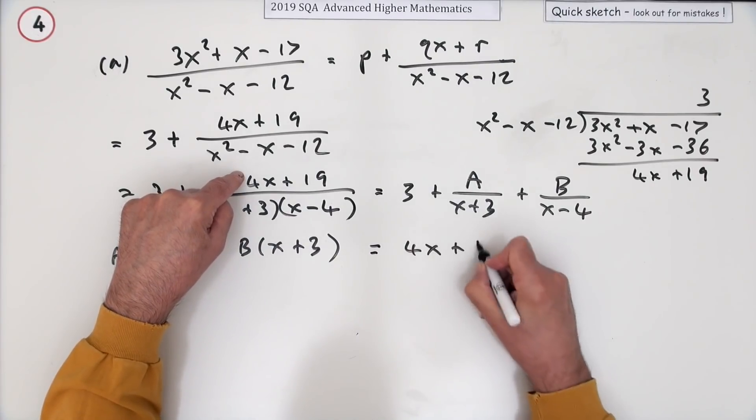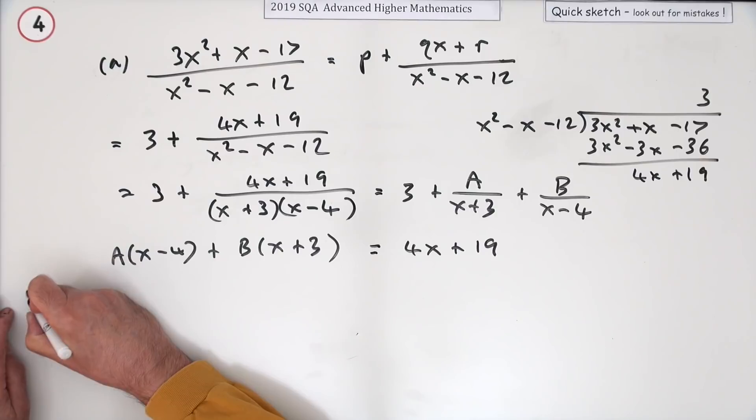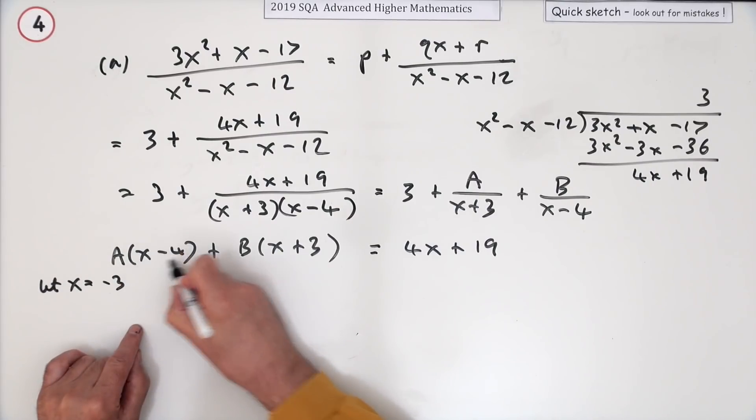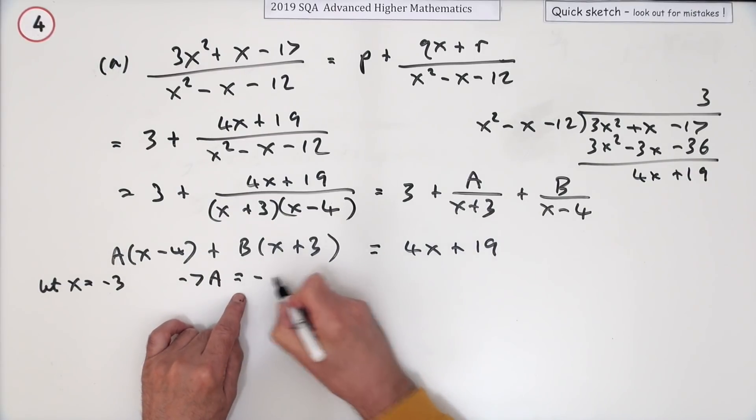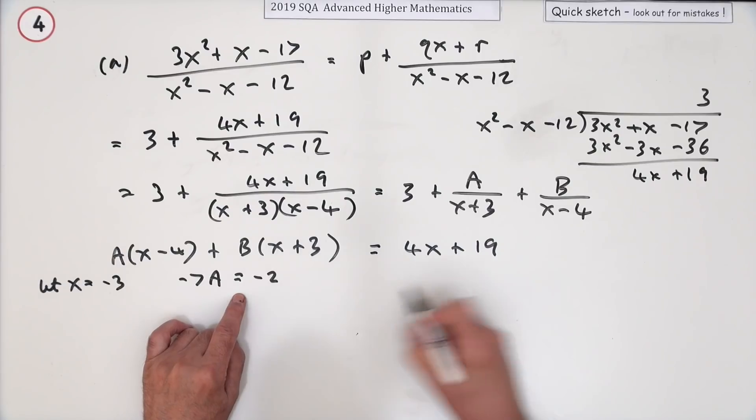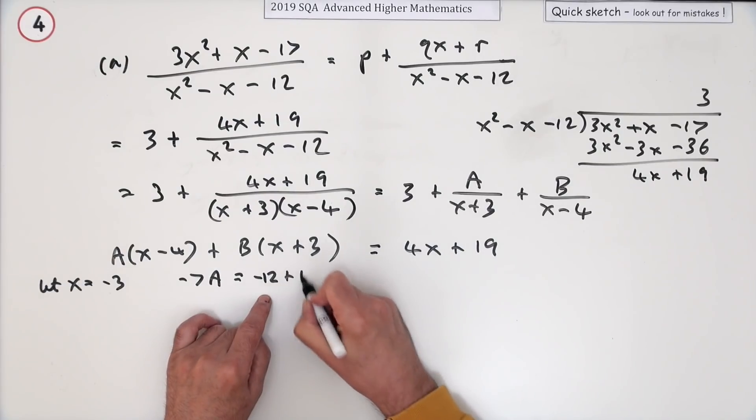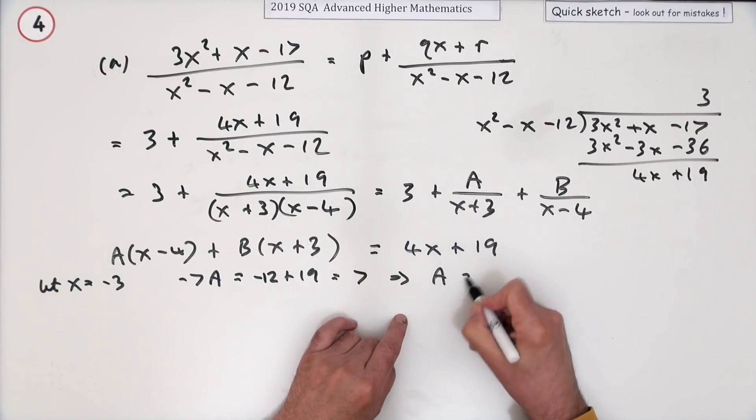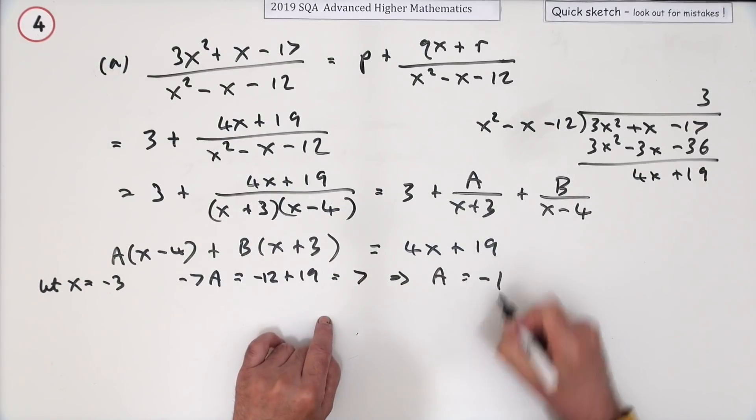And I'm just going to use knockout values. Let x equal, get A first, so I'll put x equals negative 3. In which case that's negative 7A is equal to, I'll just spell it out, that'll be negative - negative - there's negative 12 plus 19, so that's a 7. So that means A is equal to negative 1.